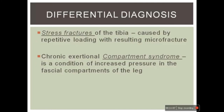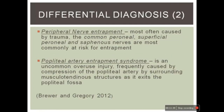Differential diagnosis includes two main conditions: tibial stress fracture, caused by repetitive loading resulting in microfractures — you can palpate and sometimes see a bump over the region; and chronic exertional compartment syndrome, a condition of increased pressure within the fascial compartment of the leg. Also consider peripheral nerve entrapment, which can mimic shin splints symptoms but is not the same condition.